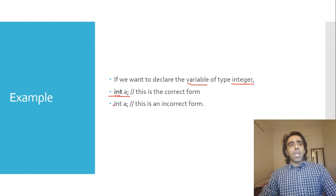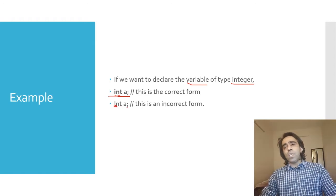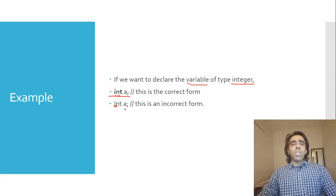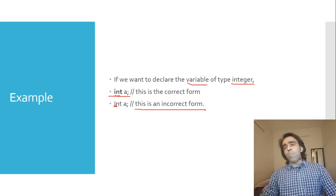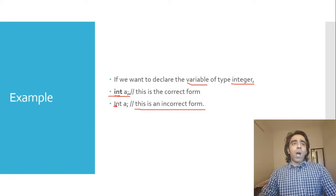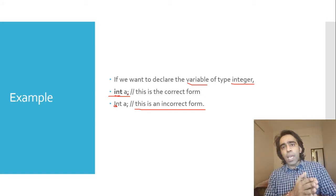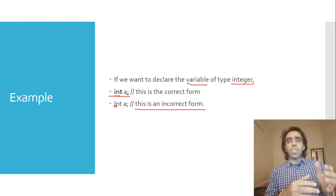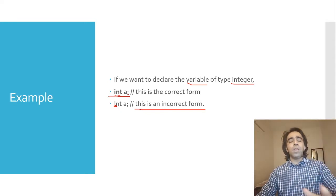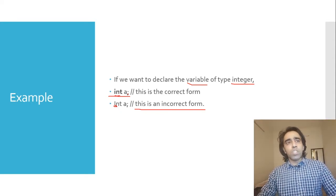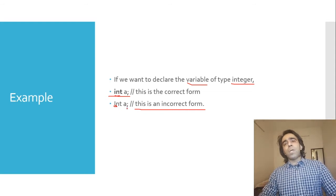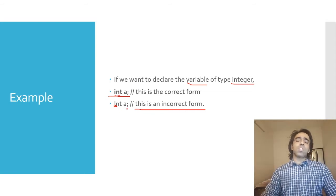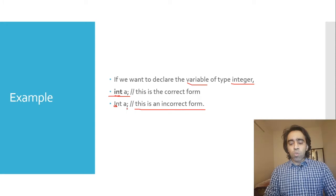If I write 'Int' with a capital 'I', that is an incorrect form. The keyword 'int' must be in lowercase. 'Int' with a capital I is not available in C programming. So using 'Int' instead of 'int' would be a syntax error.